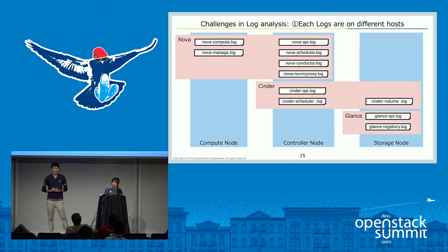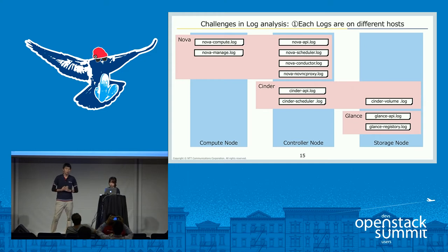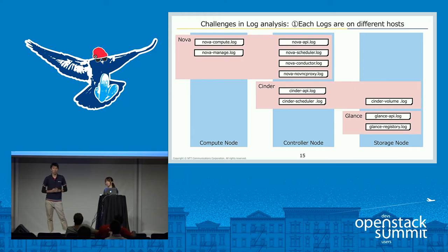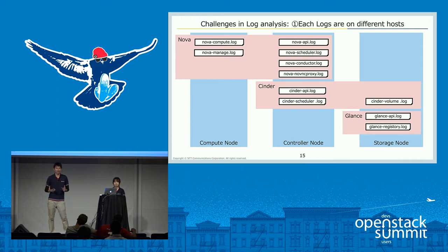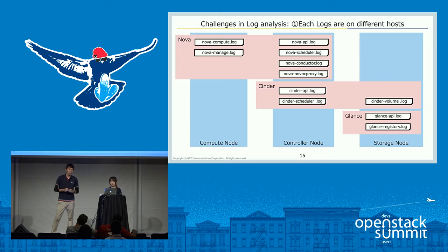I would like to explain three challenges in log analysis. The first challenge is that each log is on a different host. OpenStack has various logs — for example, Nova has six logs, Cinder has three logs, and Glance has two logs. If you are using OpenStack in a production environment, you use multiple hosts, so each log is located on a different host, making it difficult to find which log contains the error.